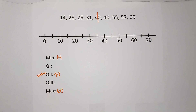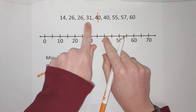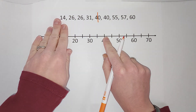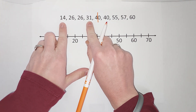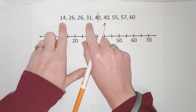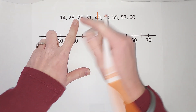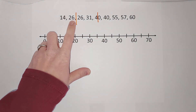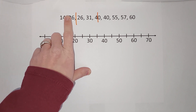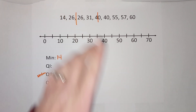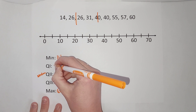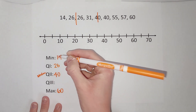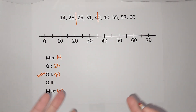To find my first quartile, I'm going to find the middle of the left side — the bottom half. I don't count 40 since it is the median. My first quartile falls between two numbers; since they're the same number, my first quartile is 26. If they weren't the same, I would add them together and divide by two — which also gives you 26.